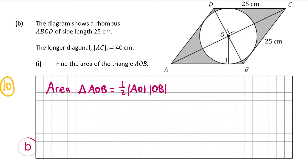We know that the distance AC is equal to 40 centimeters, which means the distance AO must be 20 centimeters. We also know that AB must be 25 centimeters as all sides in a rhombus are equal. We have AB but we don't have OB, and we need OB to work out the area of the triangle.